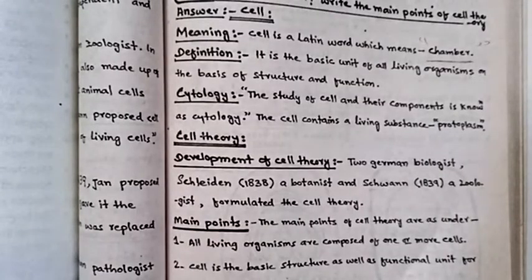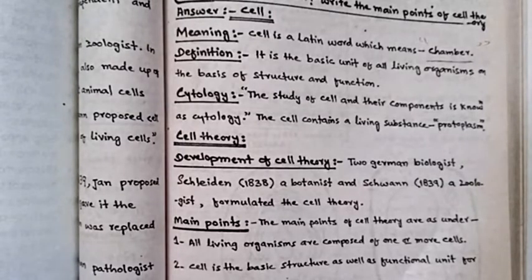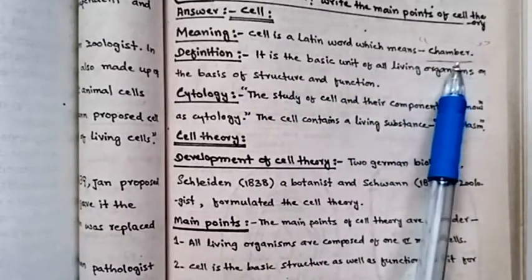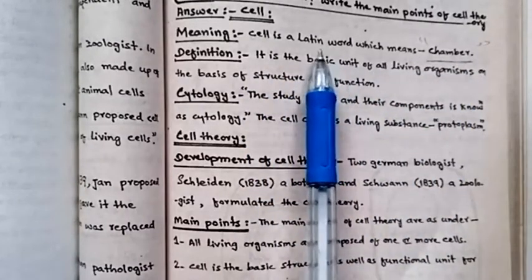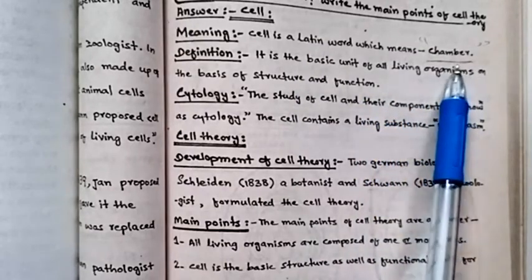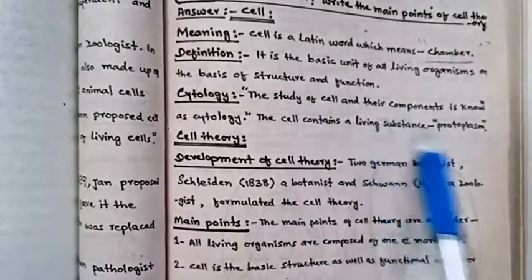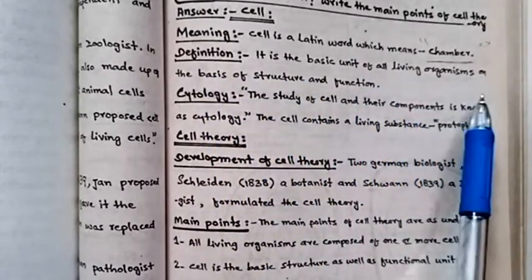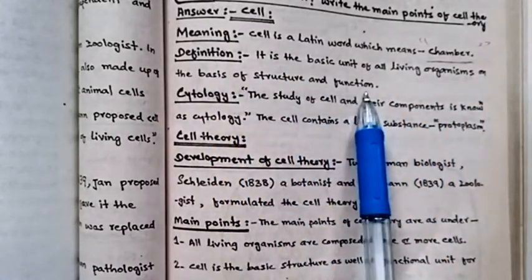First we will discuss cell. The meaning: cell is a Latin word which means chamber. Definition: it is the basic unit of living organisms on the basis of structure and function.